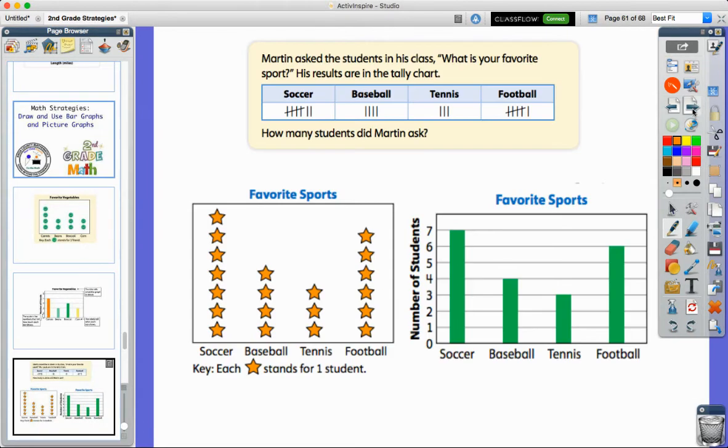So let's look at an example from the book. This was one of their problems. It said Martin asked the students in his class, what is your favorite sport? His results are in the tally chart. So he went around and asked all of his classmates, and he put little tallies for their favorite sports. So the question was, how many students did he ask? And then down here, we see the data shown in both of our examples we're looking at in this lesson. So we have a picture graph. Each star is one student. Over here, we have our bar graph with the same information. And then it tells us that using that vertical number line or that scale on the left-hand side tells us the number of students who picked that.